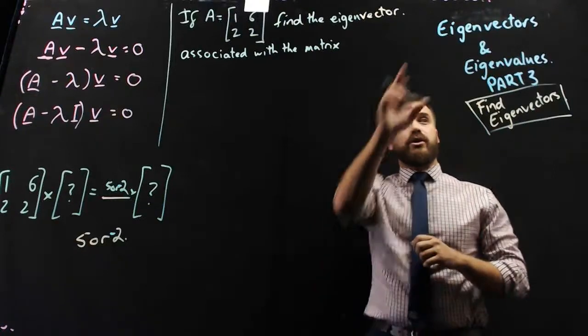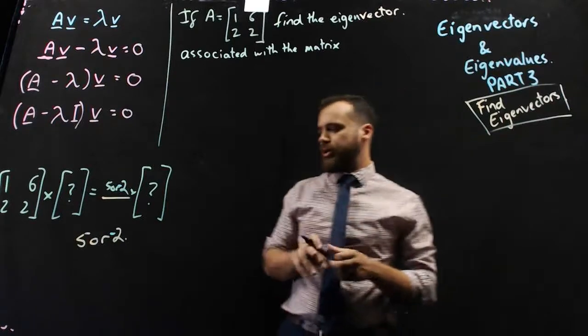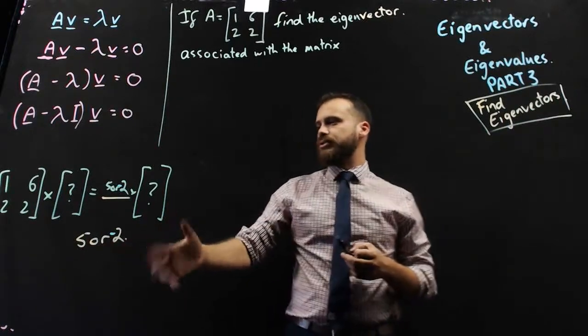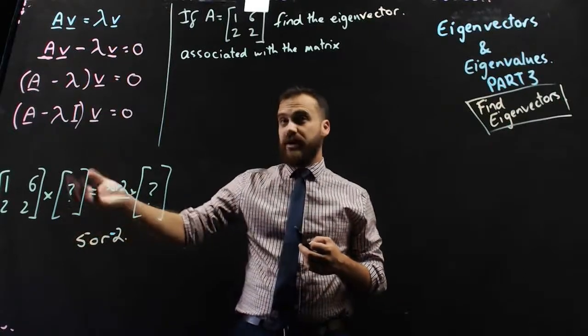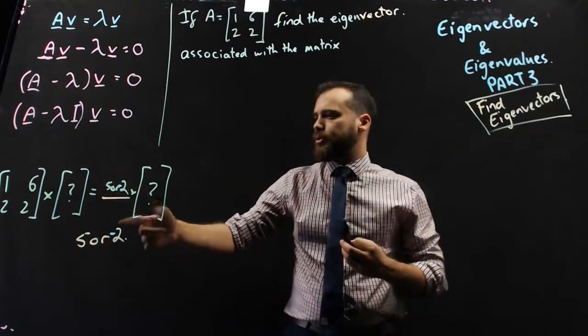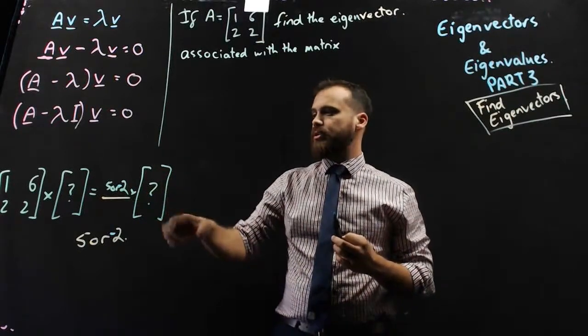All right, so in our last video we were finding eigenvalues. Now we found our two eigenvalues, 5 or negative 2. So our matrix times some eigenvector, which we don't know, will be equal to 5 or negative 2 times the same eigenvector.